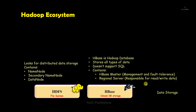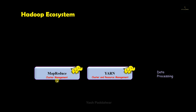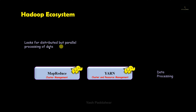Since HBase stores all types of data, it is called a column database storage. Now let's move to the data processing section. This contains two components: MapReduce and YARN. I have already made two separate videos with detailed explanations of these two components, including their architectures with examples — I recommend you watch those.